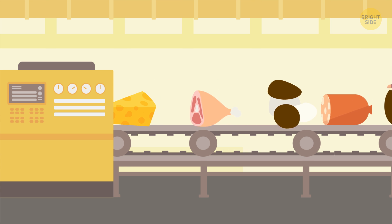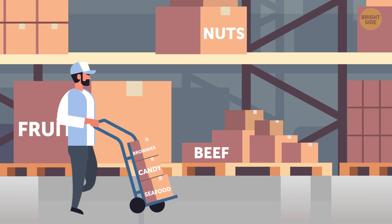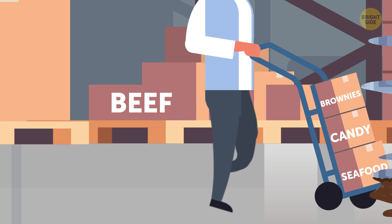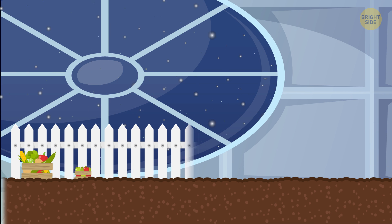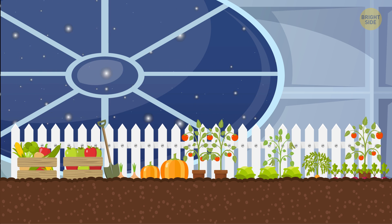According to NASA, astronauts dine on fruits, nuts, chicken, beef, seafood, candy, and even brownies. They also have coffee, tea, juices, and lemonade.